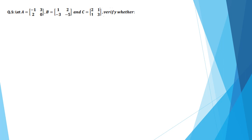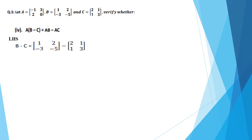Question number 5: there are three matrices A, B, and C. We have to verify the result A into (B minus C) equals AB minus AC. On the left hand side, solve the bracket first and then multiply the resultant value with matrix A. The equality sign between left hand side and right hand side means the LHS result is always equal to the RHS result. Take the left hand side — solve the bracket B minus C: 1 minus 2 equals minus 1, 2 minus 1 equals 1, minus 3 minus 1 equals minus 4, minus 5 minus 3 equals minus 8. This is the result of B minus C.